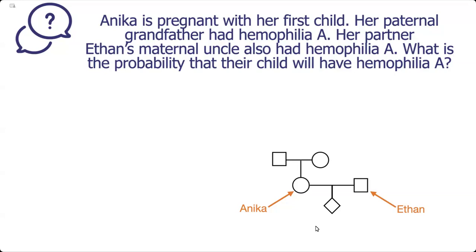These are Anika's father and mother. The question states that her paternal grandfather had hemophilia A — that means the grandfather on her dad's side. He is colored in with a black square because he shows the trait. That's the paternal grandfather.